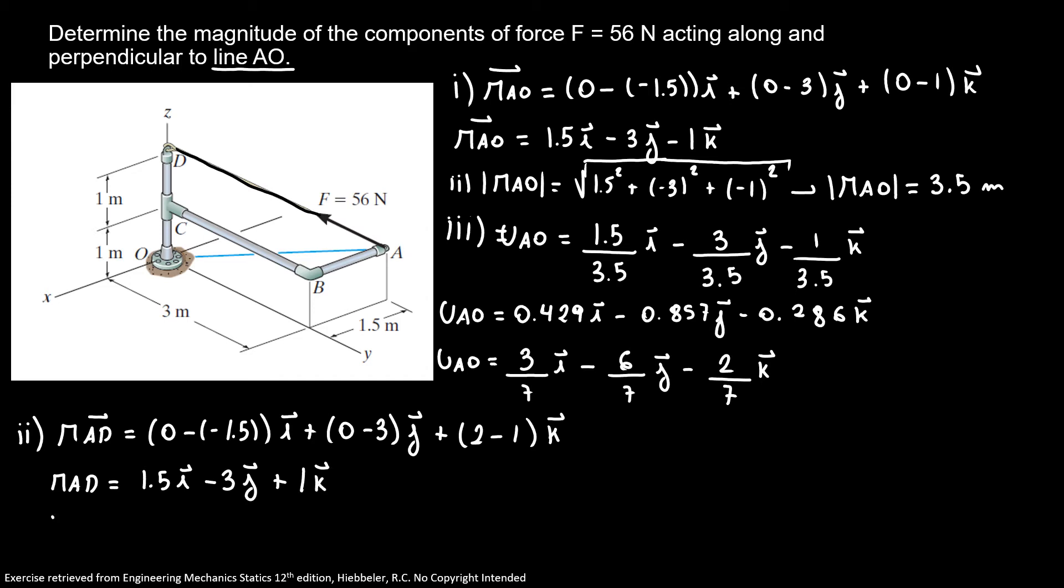The magnitude of my position vector AD is the same as my position vector AO, which is 3.5 meters. So my unit vector AD is 3 over 7 I minus 6 over 7 J plus 2 over 7 K.